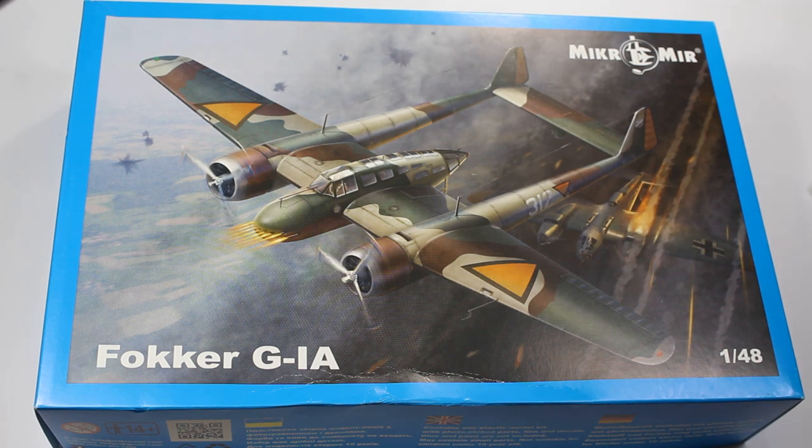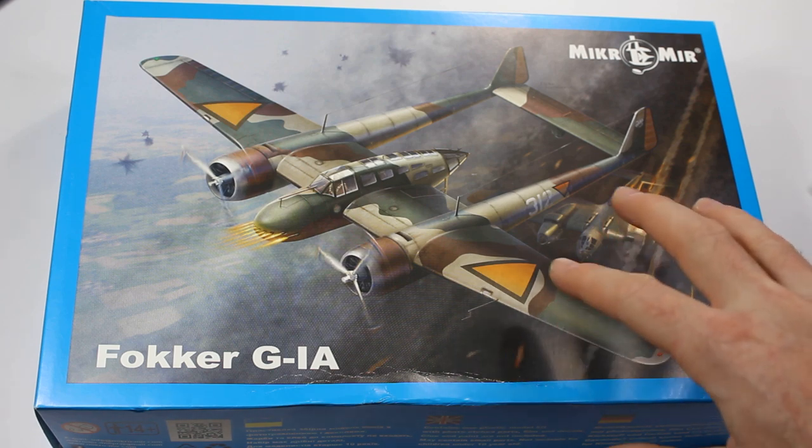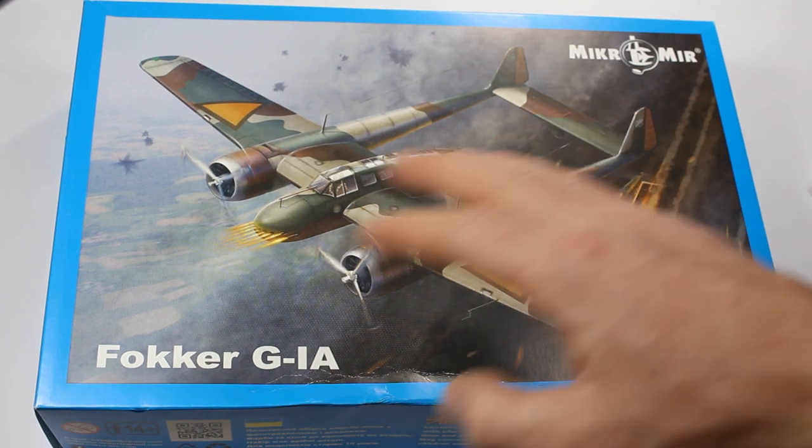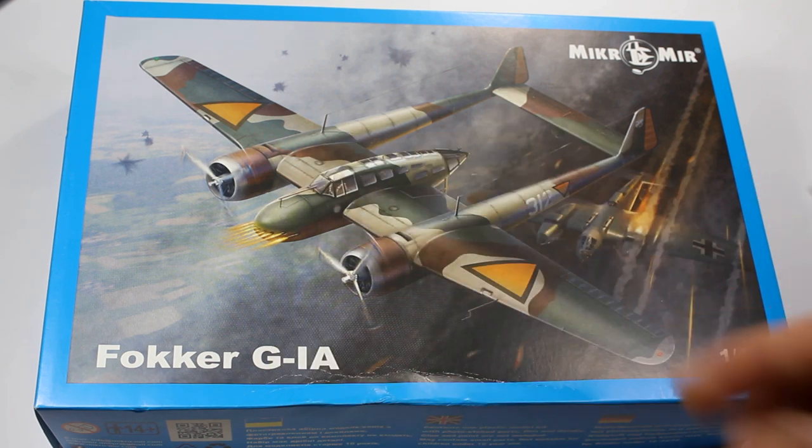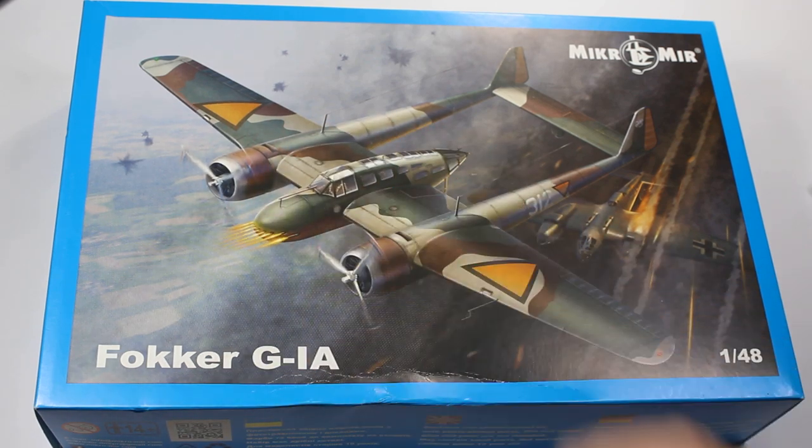This is a new release for Micromir, which is a Ukrainian company, and this is a 1:48 scale of a very unusual Dutch heavy fighter with the twin boom tail, very much like a sort of mix of a P-38 and almost a B-25 as far as how the front of the nose looks.